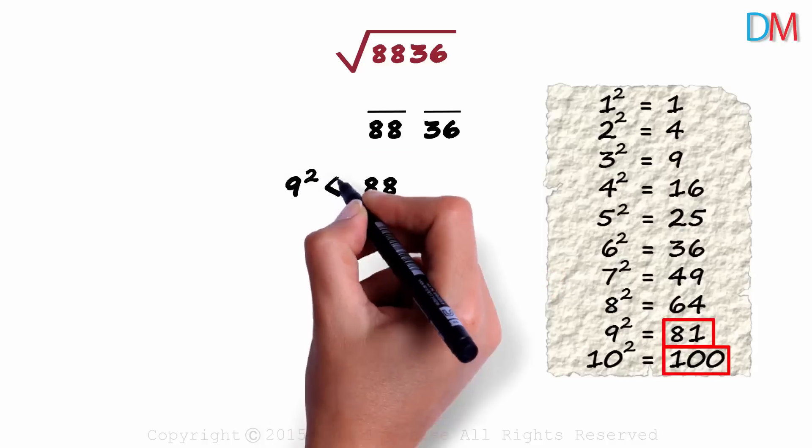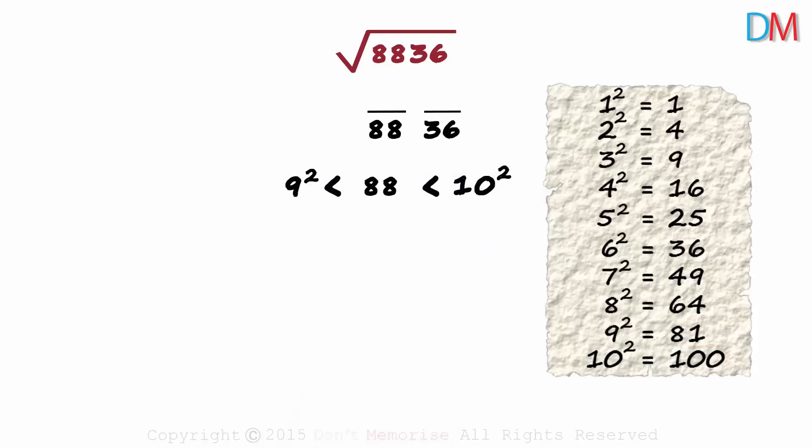It lies between 9 squared and 10 squared. And to get the 10th digit, we take the lower of the two. 9 will be the 10th digit.